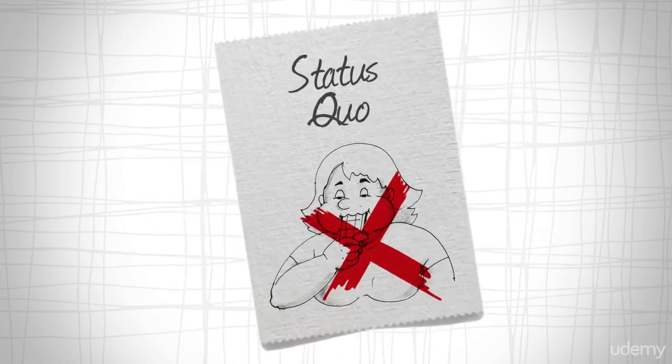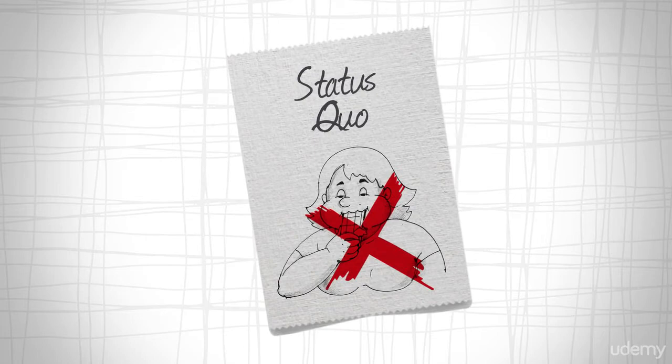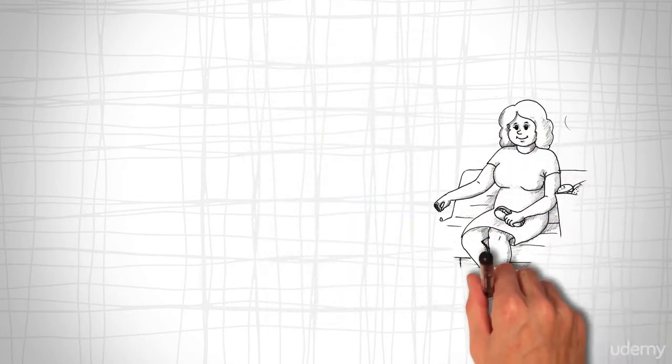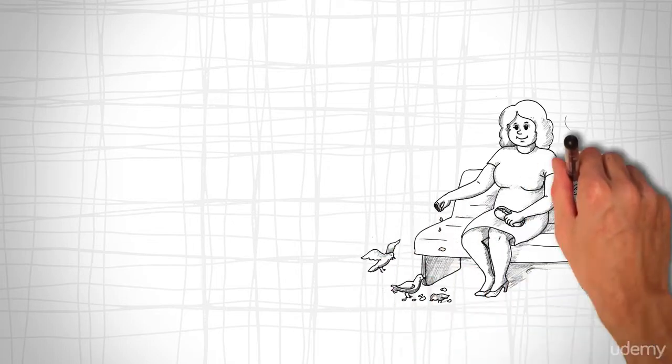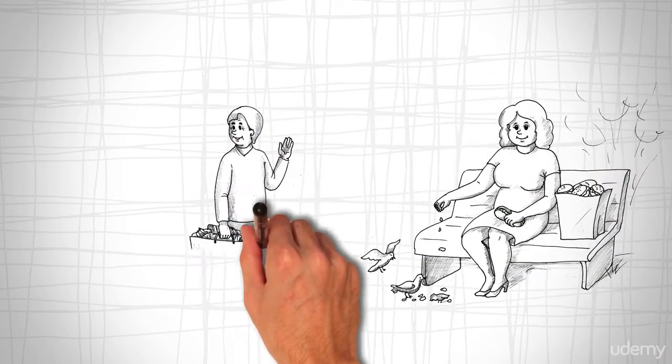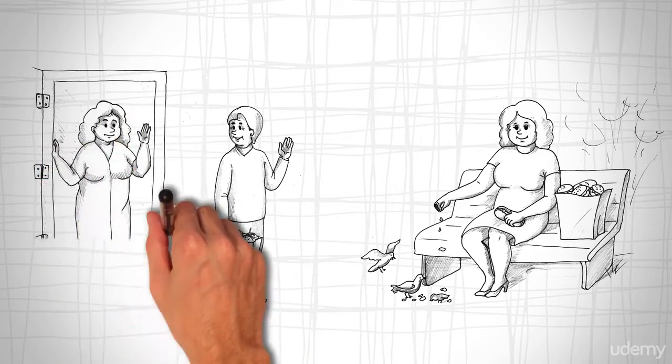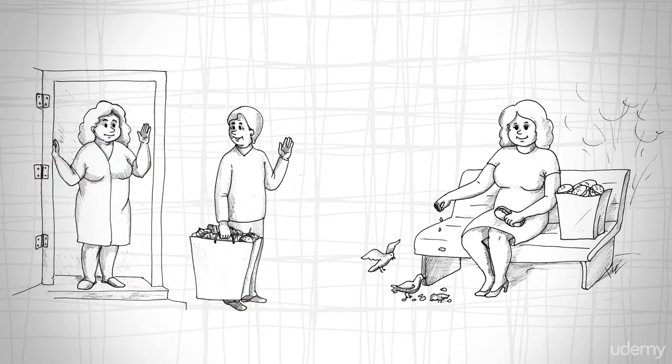Then, try coming up with several alternatives to the status quo. Instead of seeing things in black and white, having or not having, come up with more ideas. You can donate the food, or you can also give it to your friend to keep for you.